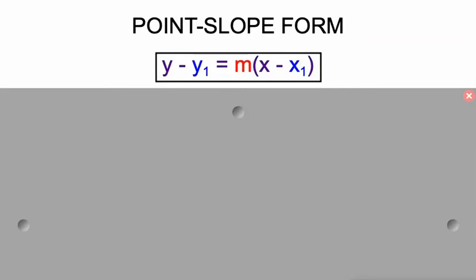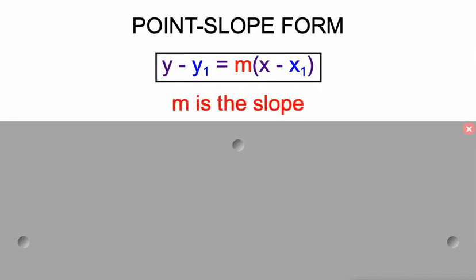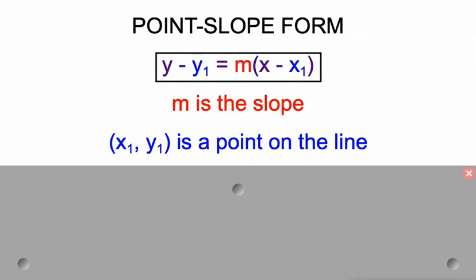Reminder, point slope form looks like this: y minus y sub 1 equals m times x minus x sub 1. m is the slope and x sub 1, y sub 1 is just any other point on the line. Sometimes you'll see this minus y sub 1 as a plus y sub 1 over here on the right, but this is the way IXL looks at point slope form.